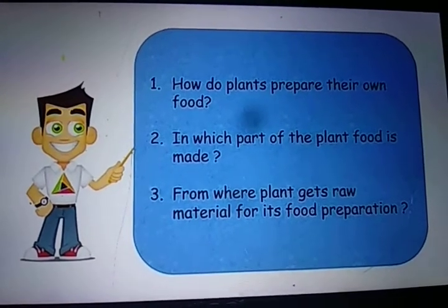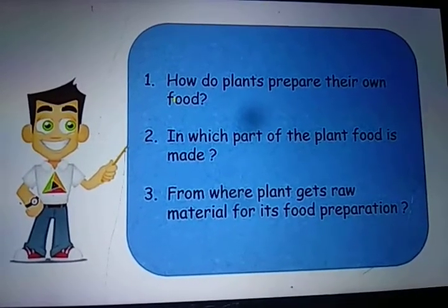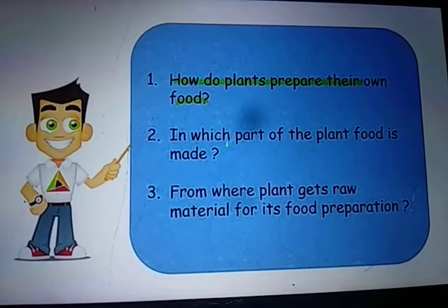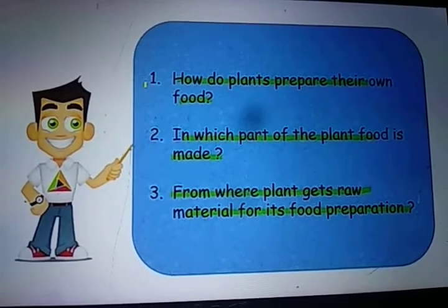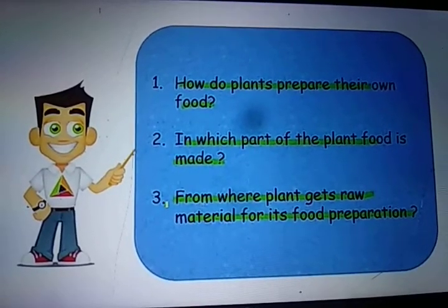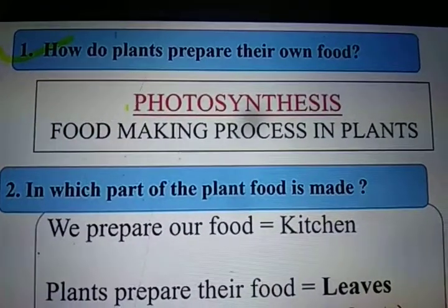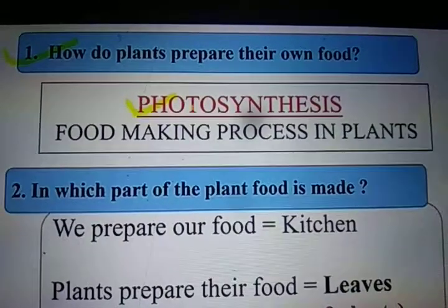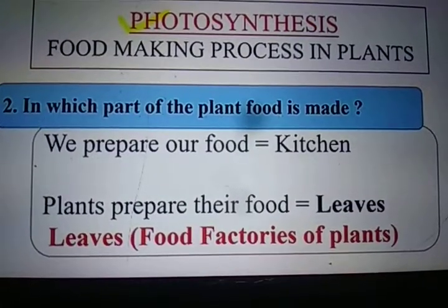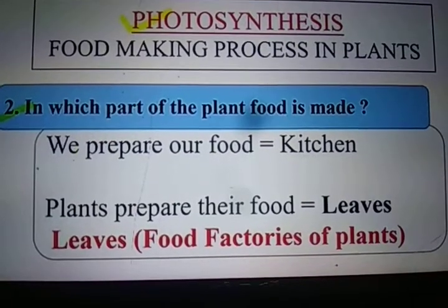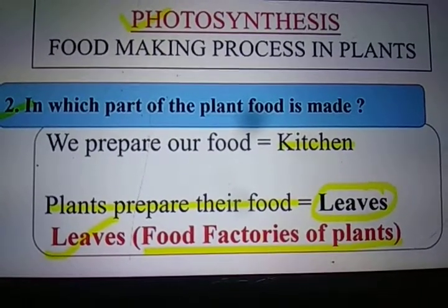Plants can prepare their food themselves. The first question is: how do plants prepare their own food? And the answer is by a process known as photosynthesis. Photosynthesis is the food-making process in plants. Just as we prepare our food in a kitchen, plants prepare their food in their leaves. Leaves are called the food factories of plants.